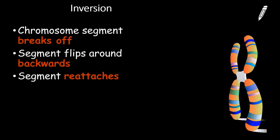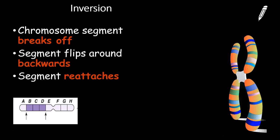Now, what about inversion? For an inversion, that's when a part of the chromosome actually breaks off and then flips around and reattaches itself. So for example, if this is the sequence we had, A, B, C, D, E, after the mutation,